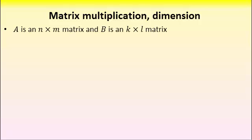So let's say that I have two arbitrary matrices A and B. A has dimension N by M and B has dimension K by L. I'm careful here not to use the same symbol for any of the dimensions because I want them to be completely arbitrary.